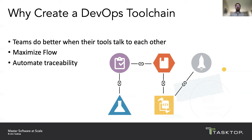This improves efficiency by enhancing collaboration between teams using different tools and maybe even working in distributed environments. It also eliminates errors, delays, miscommunications, and problems due to lost or mishandled requests and information. A DevOps toolchain maximizes flow.